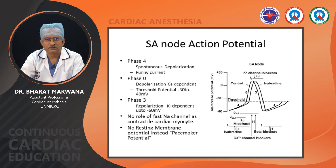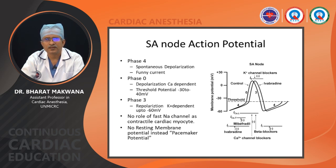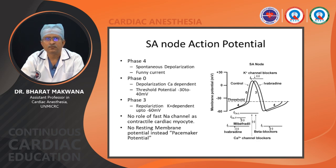Some drugs affect the SA node action potential: ivabradine blocks the funny channel. Calcium channel blockers affect phase zero. Beta blockers affect phase three, slowing repolarization and delaying return to minus 60 mV, thereby delaying new action potential generation and reducing the rate of the SA node.